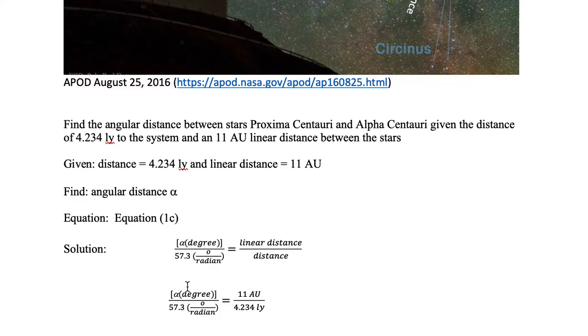So the left-hand side stays the same: Alpha in terms of degrees, that's our angular separation. 57.3 degree per radian is our conversion, and that equals 11 AU, which is the linear distance, divided by the distance of 4.234 light years.